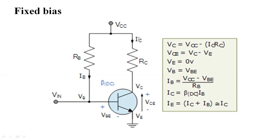That fluctuation will be reflected in the IC. There will be a voltage variation according to the collector resistance. This is what the fixed bias circuit is.